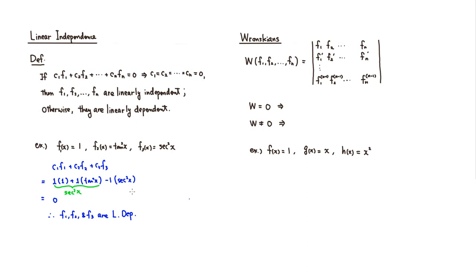If they were linearly independent, all of c1, c2, c3 would have to equal 0. We have a great tool — the Wronskian — to determine whether functions are linearly independent or linearly dependent. The Wronskian of more than two functions works the same way: put all functions in the first row, take derivatives for the second row, second derivatives for the third row, and so on up to the (n−1)th derivative in the last row, then take the determinant. If the Wronskian equals 0, the functions are linearly dependent; if it's not equal to 0, they are linearly independent.